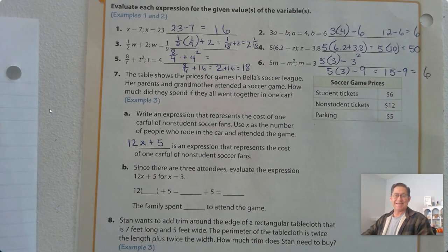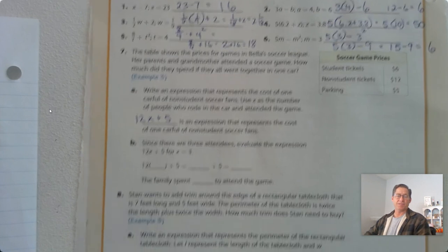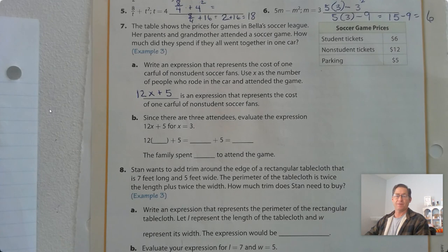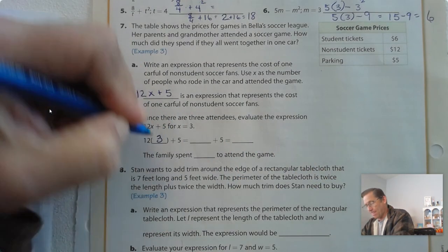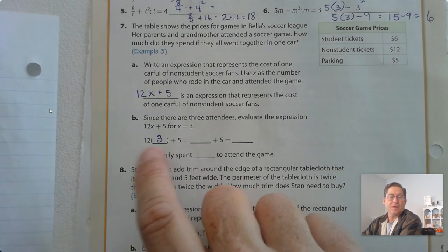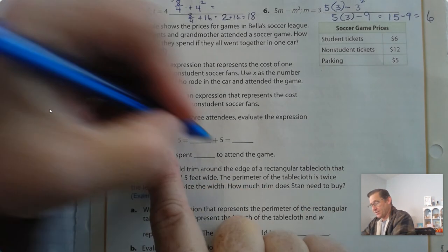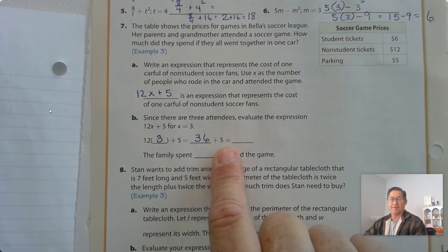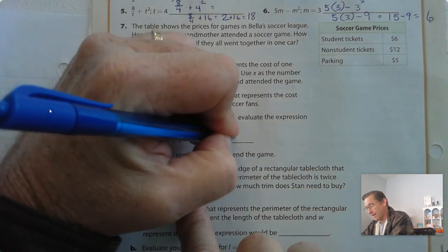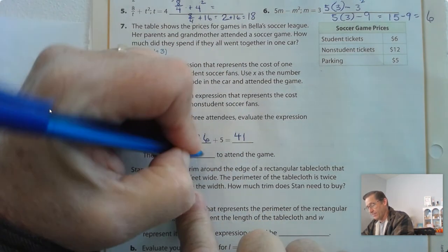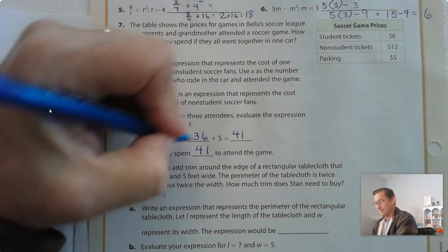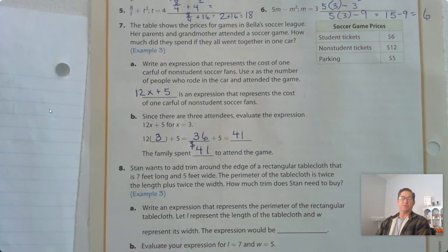Since there are three attendees, evaluate 12 times X plus 5 for X equals 3. Substitute 3 for X: 12 times 3 is 36, plus 5. 36 plus 5 is 41. So the family spent $41 to attend the game.